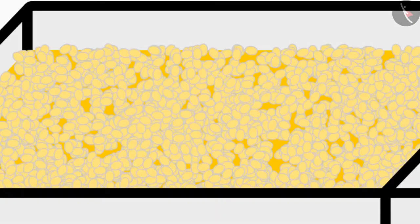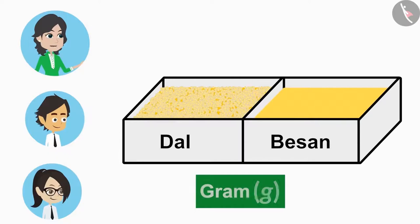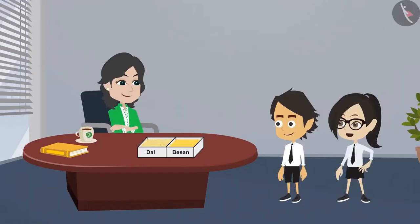Objects like Dal which are not easy to count and objects like Besan that cannot be counted are measured in grams. This means after measuring Besan in grams, we can divide it into two halves.